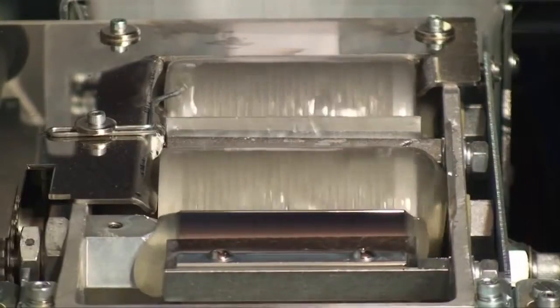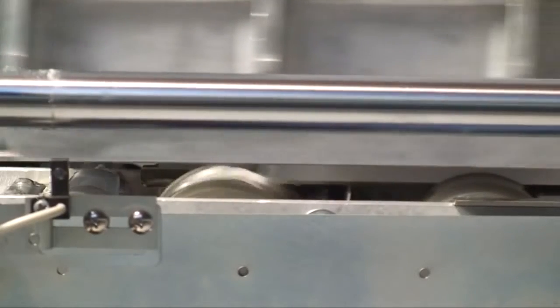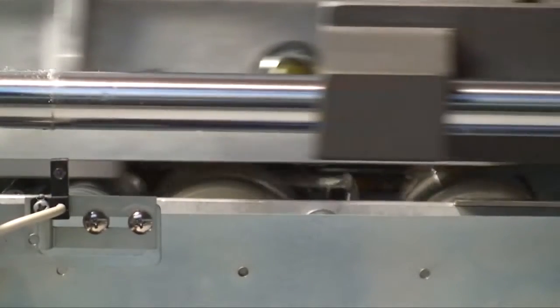Twin glue rollers ensure full and even coverage of the spine. A metering roller is included to smooth out the glue applied to the backbone.